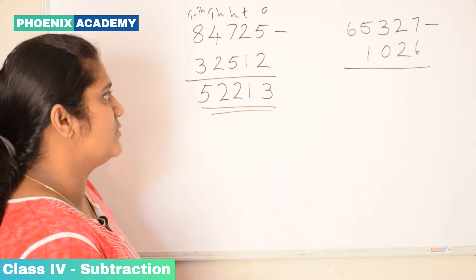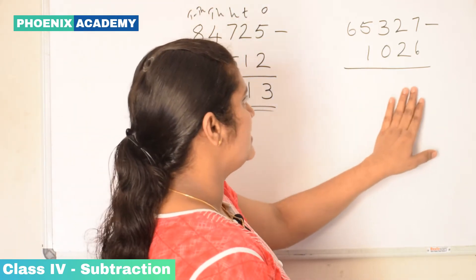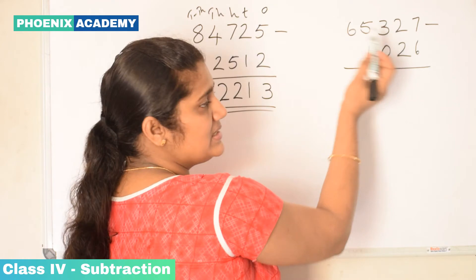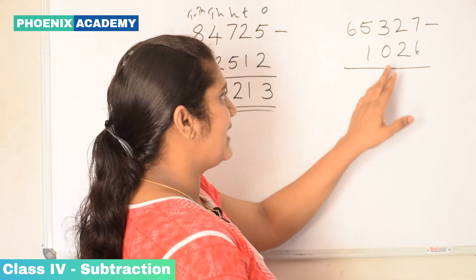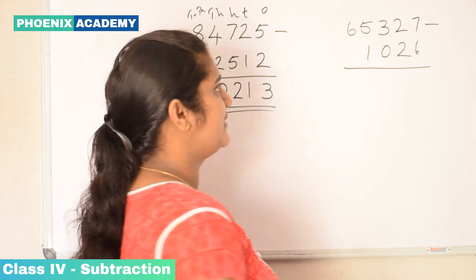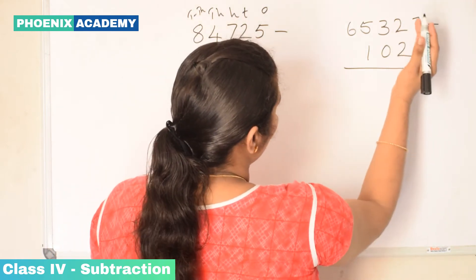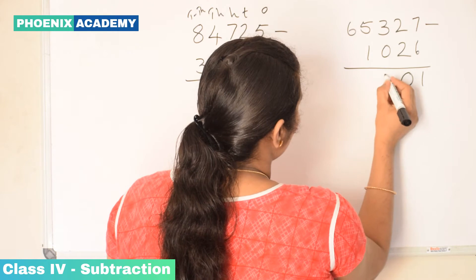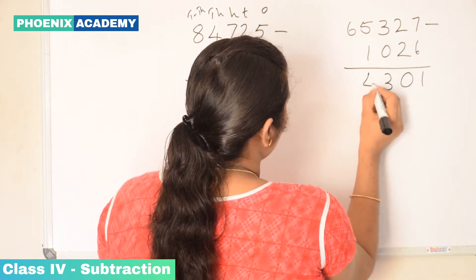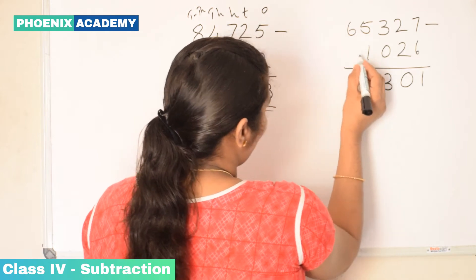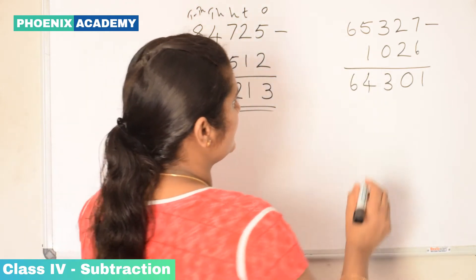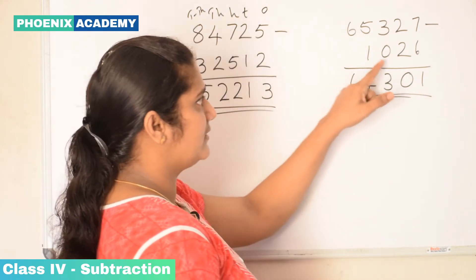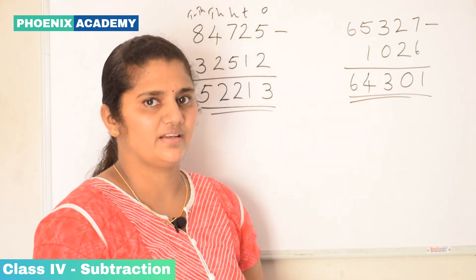Let's subtract this also. Let's subtract 1,026 from 65,327. Here the first number is a 5-digit number and we are subtracting a 4-digit number from a 5-digit number. Let's begin from ones. 7 minus 6 is 1. 2 minus 2 is 0. 3 minus 0 is 3. 5 minus 1 is 4. We don't have any value in the ten-thousands place, so we write 6. The difference of 65,327 and 1,026 is 64,301.